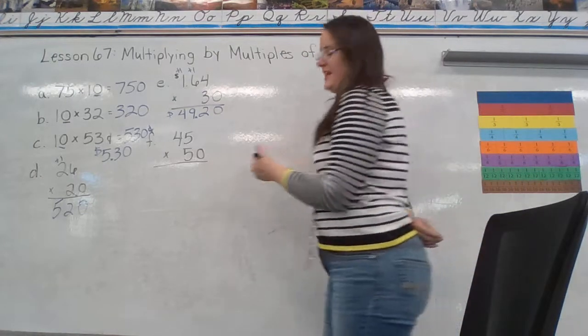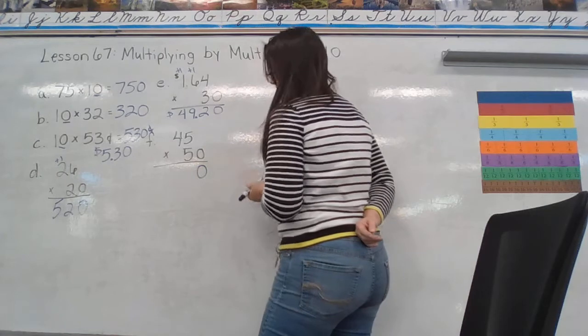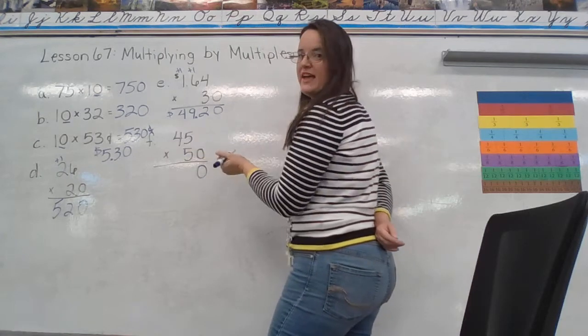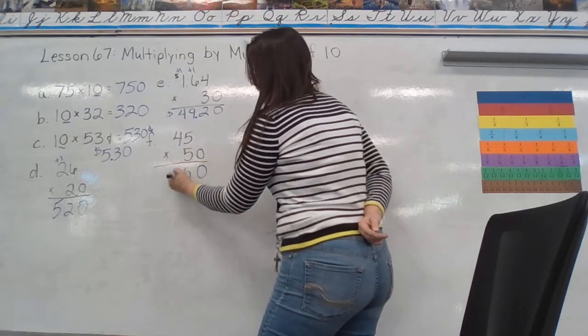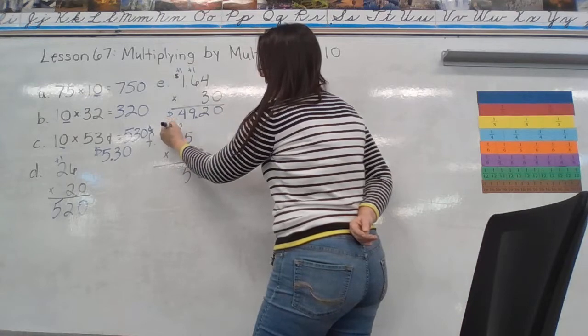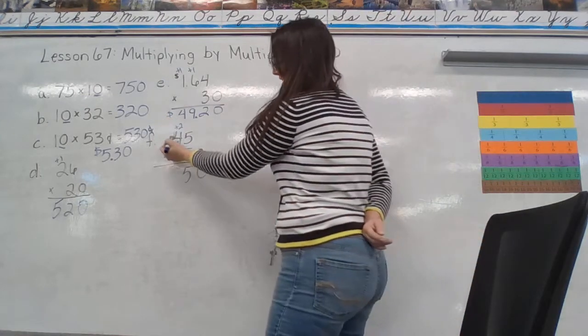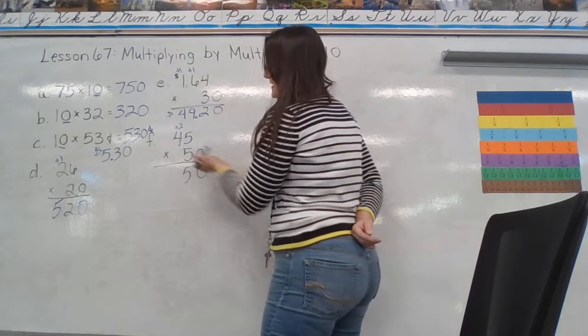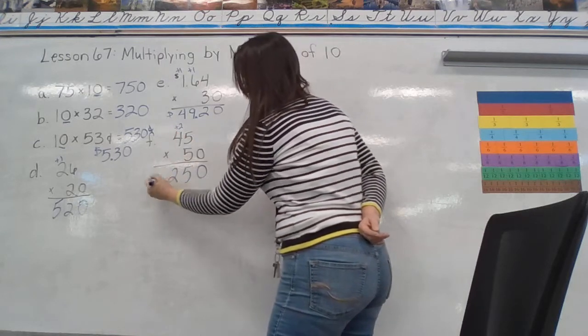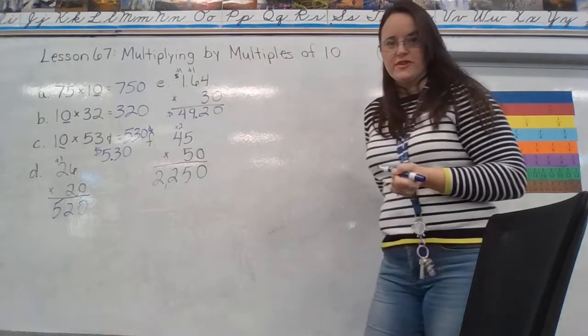And F. Again, we're just going to drop our 0. 5 times 5 is 25. Carry my 2 there. 5 times 4. This 5 times this 4. 20 plus 2. For 2,250.